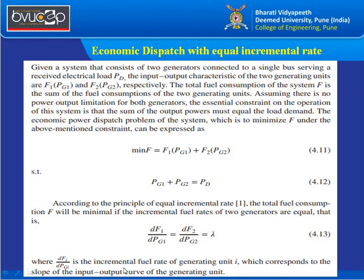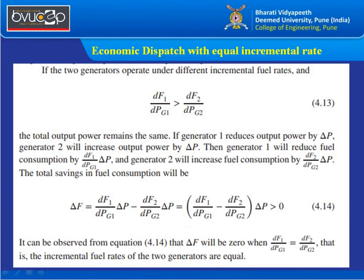The term dfi/dPgi is the incremental fuel rate corresponding to the slope of the input-output characteristics. If incremental costs are unequal, adjusting the dispatch — reducing output of generator 1 by ΔP while increasing generator 2 by ΔP — maintains total power balance. Generator 1 with less power has less fuel consumption; generator 2 with more power has more fuel consumption. The total change in fuel cost, ΔF, will be greater than zero unless incremental rates are equalized.